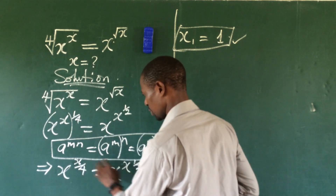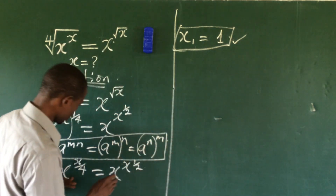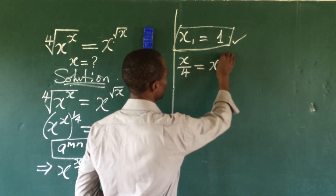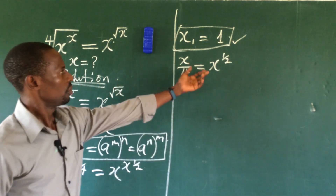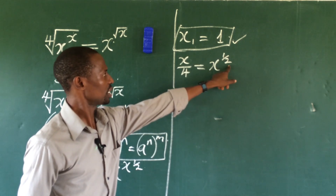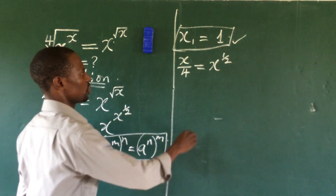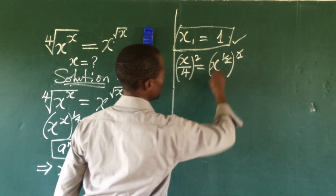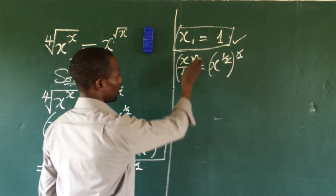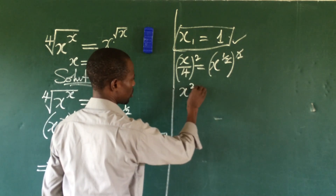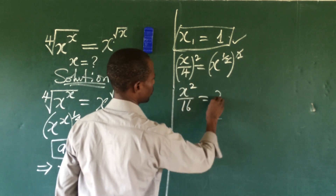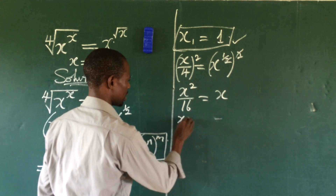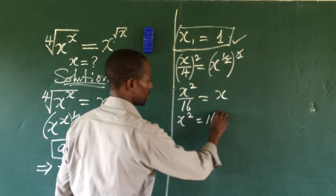Now let's equate the exponents. This gives us x over 4 equal to x to the power of 1 over 2. We need to eliminate the 1 over 2 radical, so let's square both sides of the equation. Squaring both sides gives us x squared over 16 equal to x. We then multiply through by 16, giving us x squared equal to 16x.